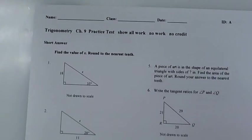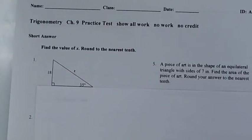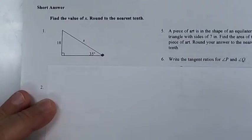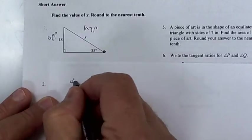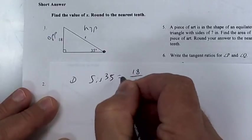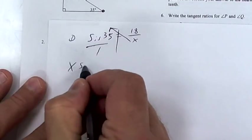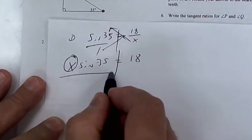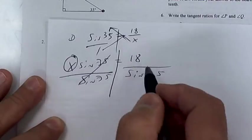All right, here we go. We did number one, but I'm going to do it again. Put a dot right here — this is opposite. So it's going to be sine of 35 equals opposite over hypotenuse. Put a one under here, cross multiply, draw your line, circle the x, divide by the sine of 35, and then use your calculator on that.